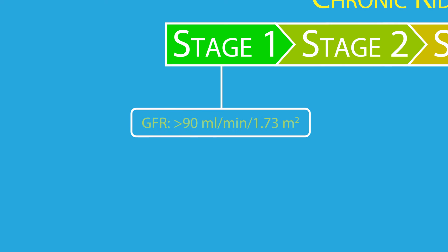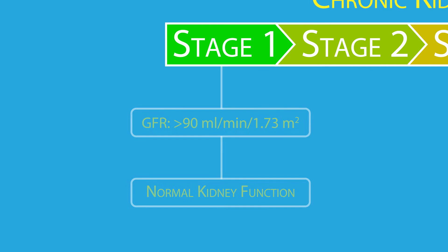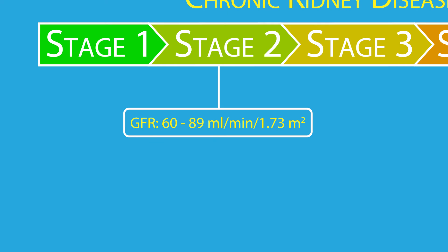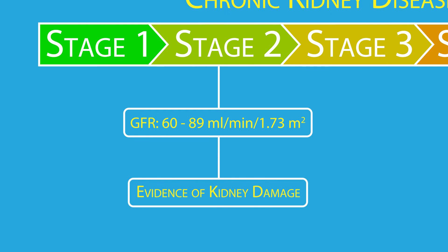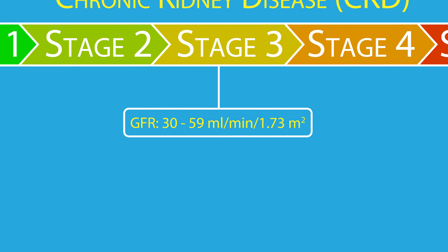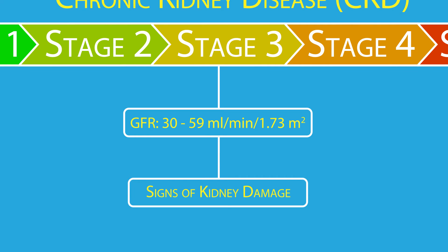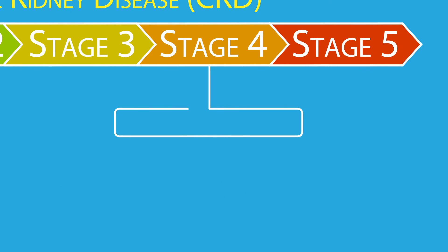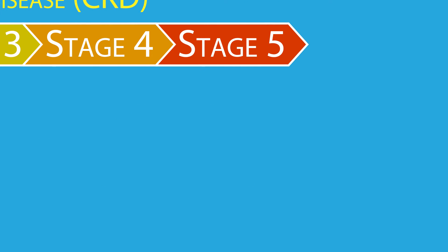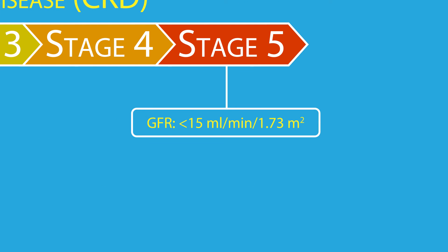Stage 1 is defined as a GFR of 90 milliliters per minute or greater and presents as normal kidney function. Stage 2 is defined as a GFR between 60 and 89 milliliters per minute and presents with evidence of kidney damage. Stage 3 is defined as a GFR between 30 and 59 milliliters per minute and presents with signs of kidney damage. Stage 4 is defined as a GFR between 15 and 29 milliliters per minute and presents with reduced kidney function. And finally, Stage 5 is defined as a GFR of less than 15 milliliters per minute and presents with damage to the kidney system.